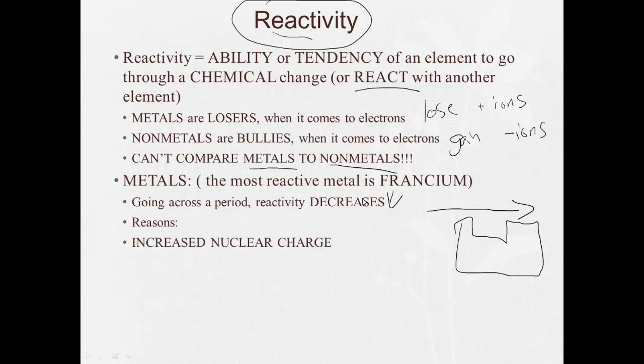Why? Well, the increased nuclear charge is going to hold on to the electrons more. And shielding is not increasing as we go across. So, it's going to really be able to hold on to the electrons more because your nuclear charge is increasing and there's nothing else blocking its pull on these electrons.